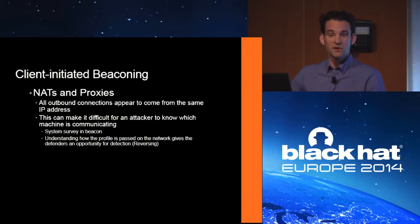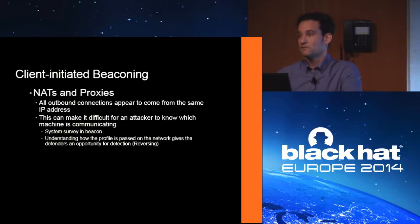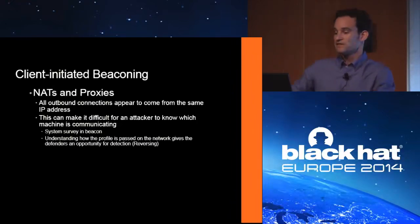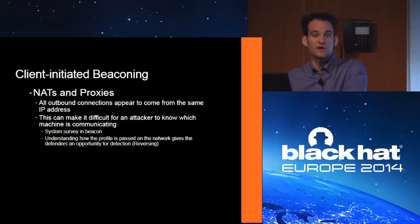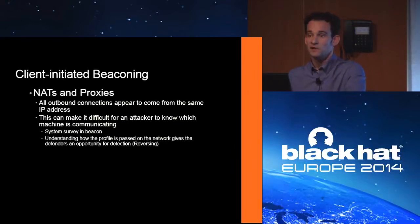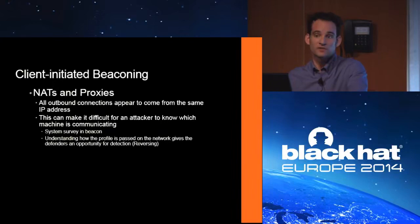Client-initiated beaconing is very popular with malware because they get run inside your network and make all their connections outbound. The attacker doesn't really know who they compromised or where on the network. One of the first things malware will do is beacon from inside the network and say, 'This is where I am.' Understanding that initial beacon — the initial profile passed out by the malware — is useful to get network signatures for a given piece of malware.